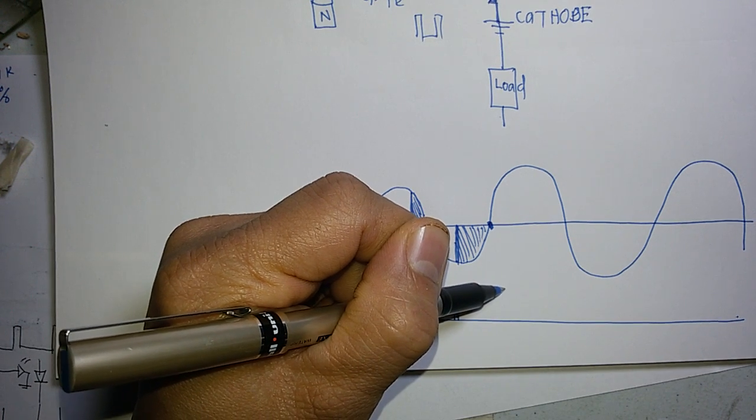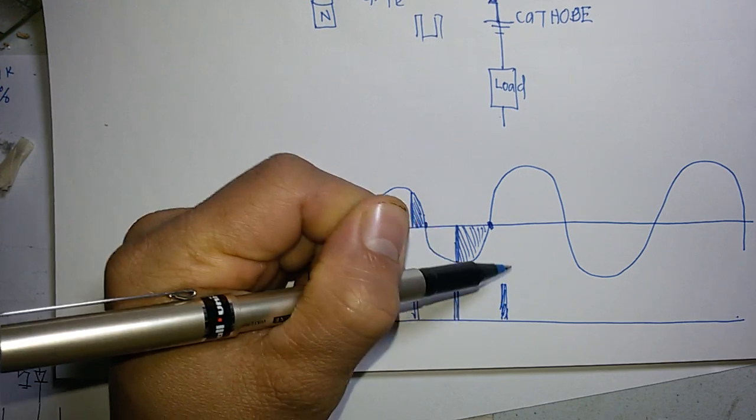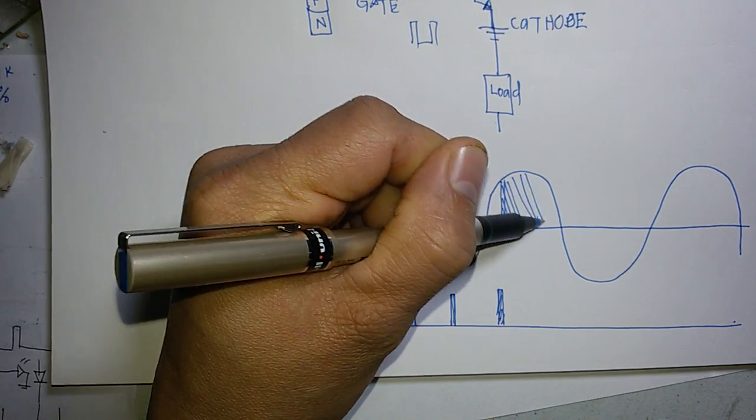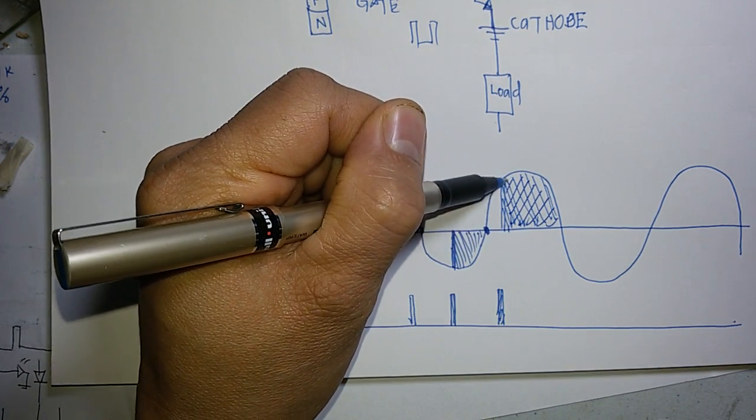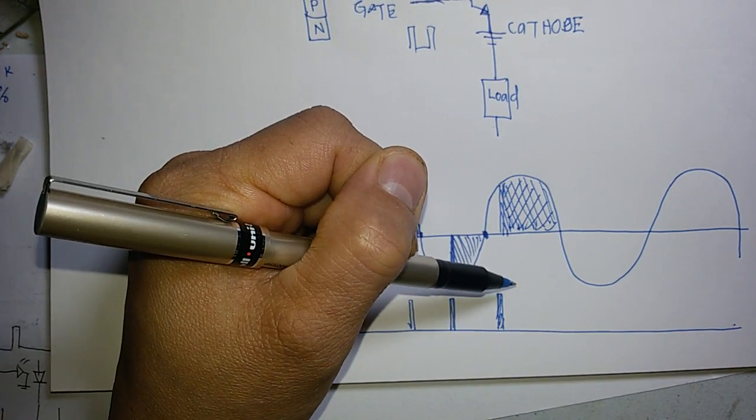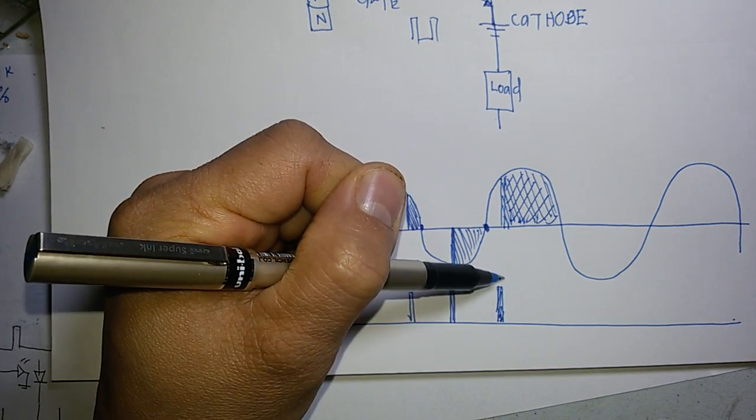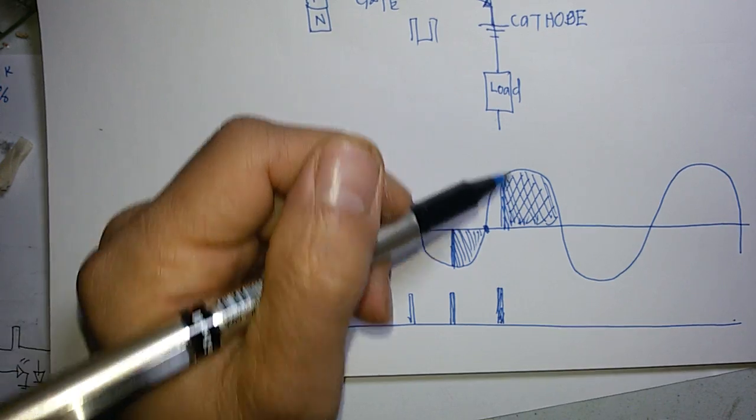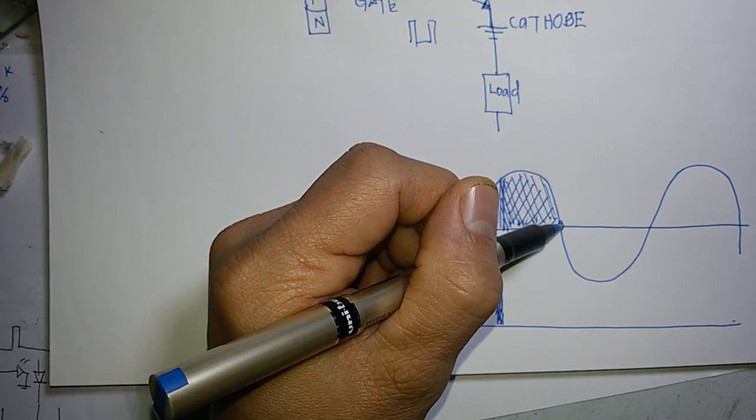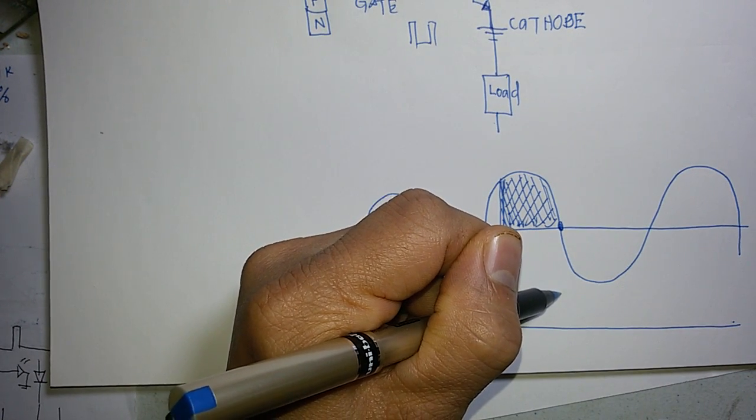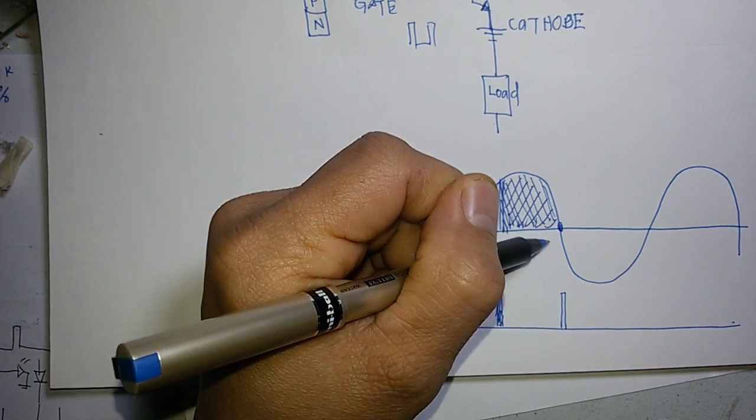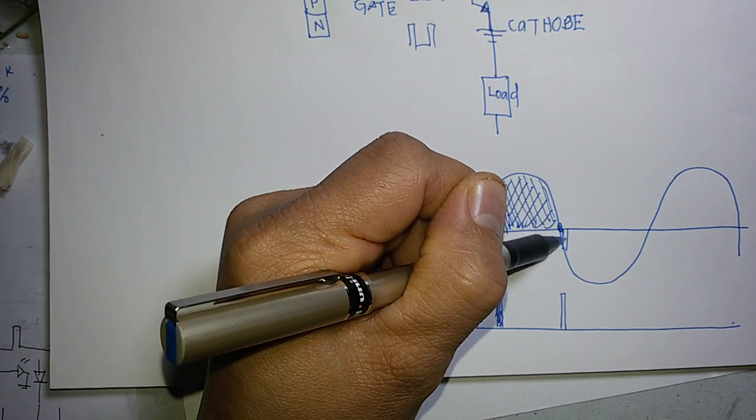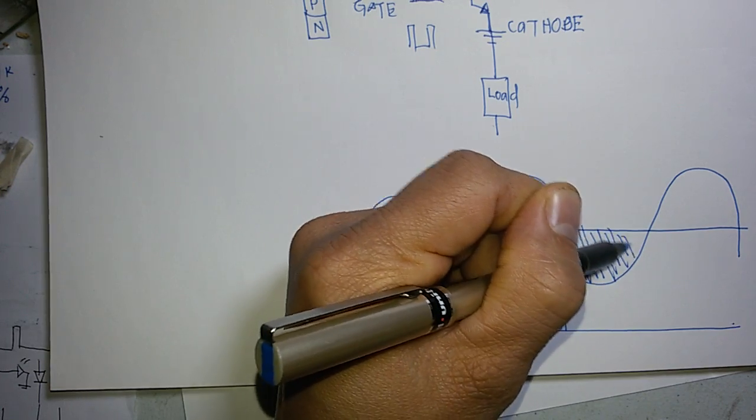So in the next pulse you are going to gate this one much earlier. So at this area you are making your SCR conduct. So when you supply the gate much earlier you have a bigger power delivered to your load at the same time. And in the next also you are going to give an early pulse or gate signal, so you are making your SCR conduct earlier. So you are supplying 100% of the power to your load.